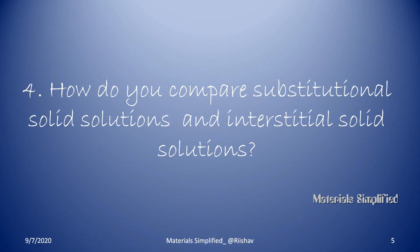Fourth question: how do you compare substitutional and interstitial solid solutions? In substitutional solid solutions, atoms with similar atomic radii replace host atoms. The atomic radii variation allowable for complete solid solubility is around 15%, as per Hume-Rothery's rules. Because the substituting atoms are nearly the same size, they do not produce significant lattice strains upon substitution.